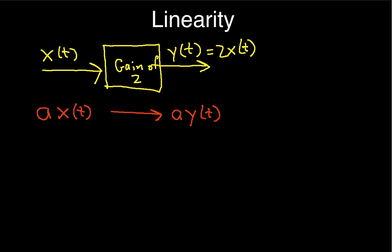If I put a x of t, so if I put this value into this system, it's going to have a gain of 2. So suppose the a x of t goes in, and then the thing that comes out is going to be 2 times the input. So it's going to be 2 times a x of t.